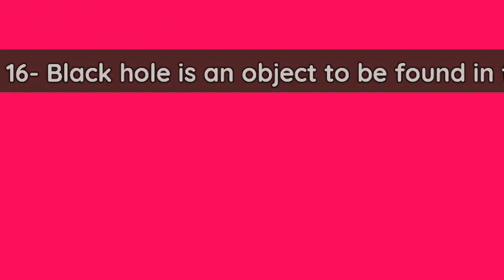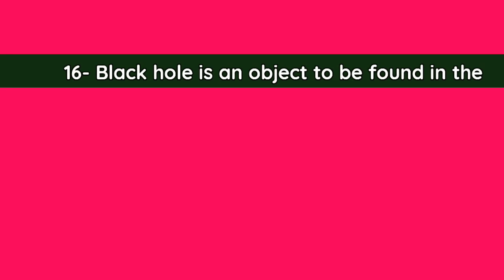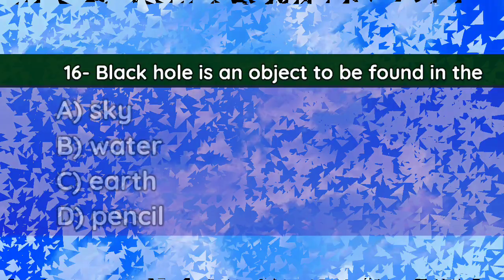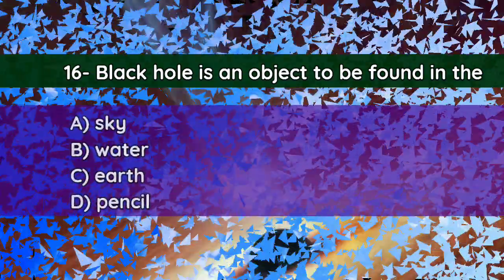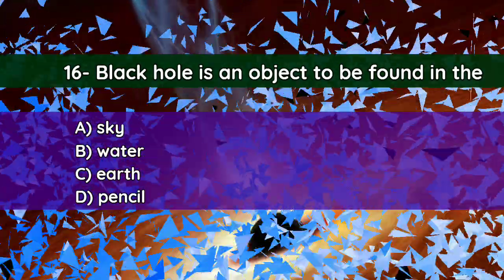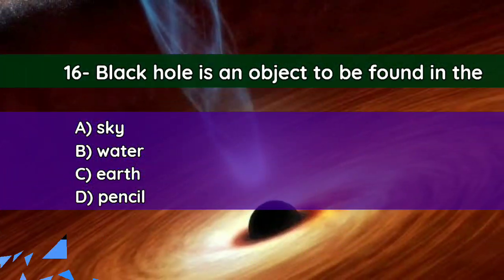Question number sixteen: A black hole is an object to be found in the — A. Sky, B. Water, C. Earth, D. Pencil. And the correct answer is A — Sky.